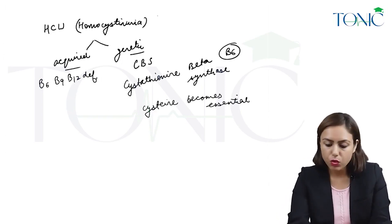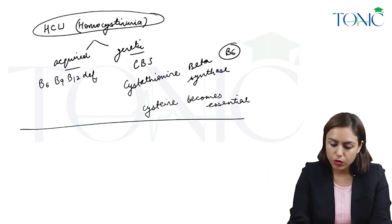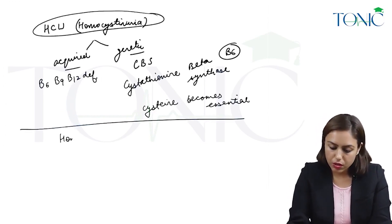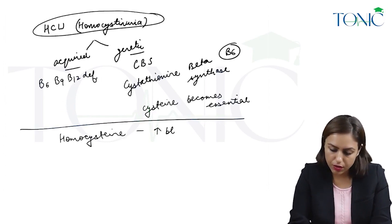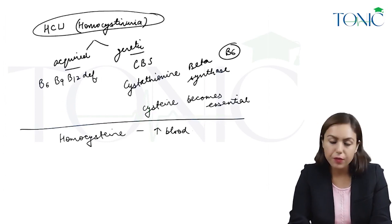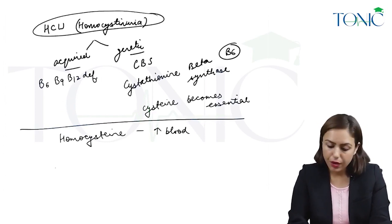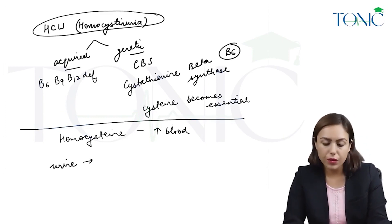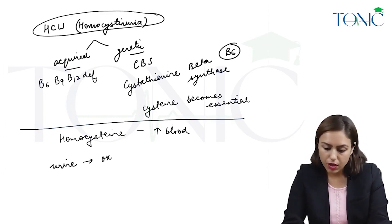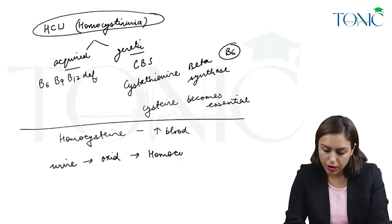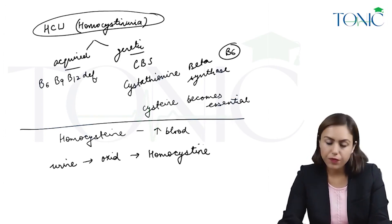In this disease, homocysteine is increased in blood. But in urine, when homocysteine comes into the urine, it gets oxidized, making homocystine.